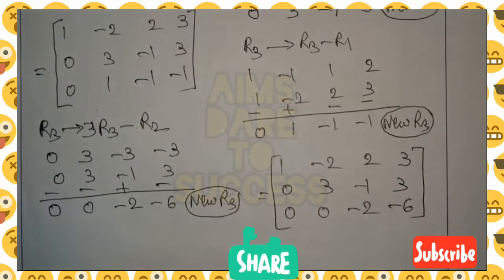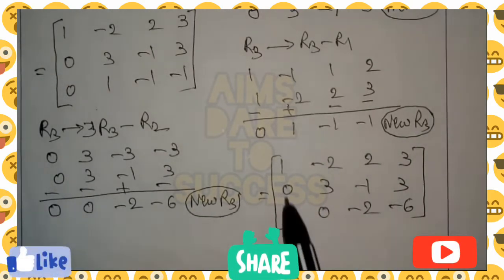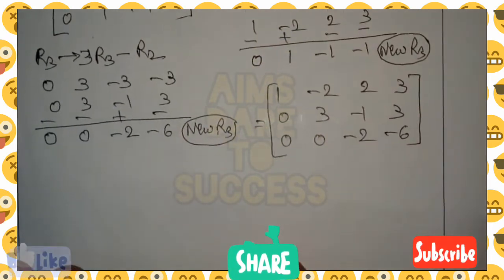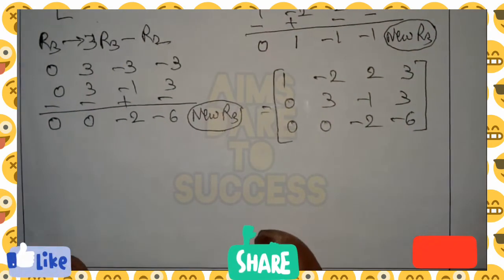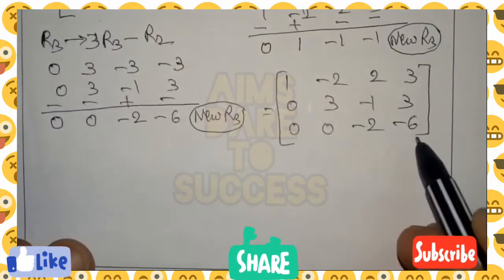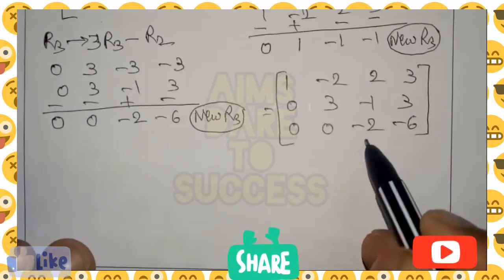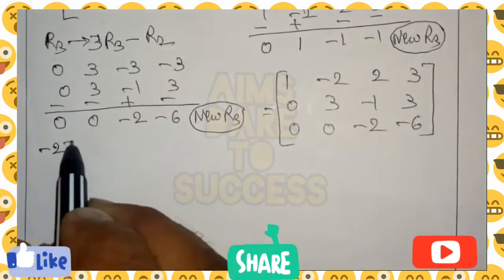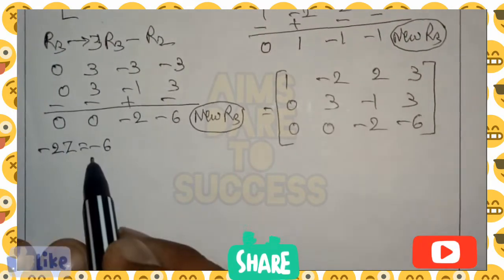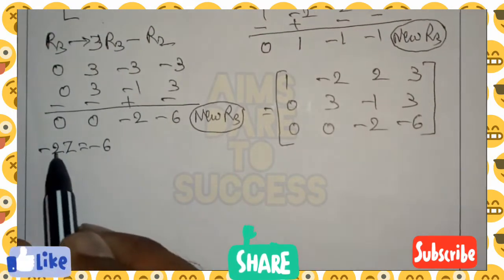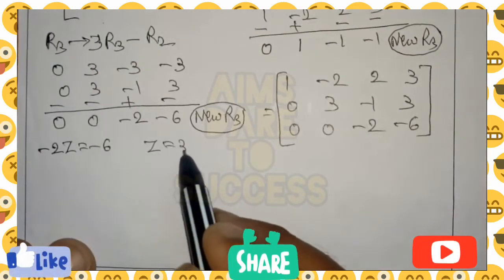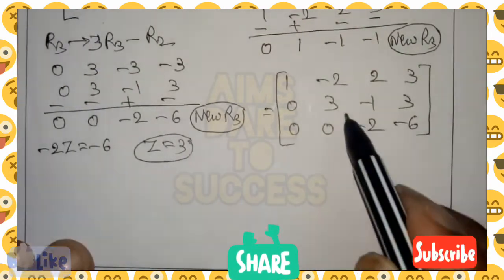Next, simple trick: the third row, third element is related to Z. That is minus 2Z equals minus 6. Left side and right side both have minus, so they cancel. Therefore Z equals 3. We got the Z value directly.